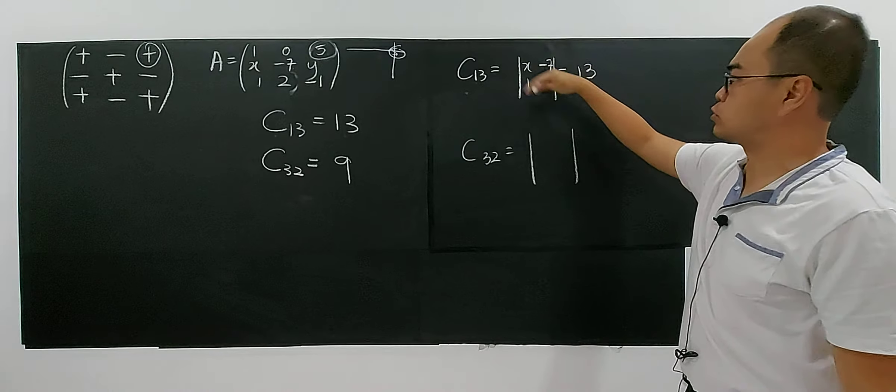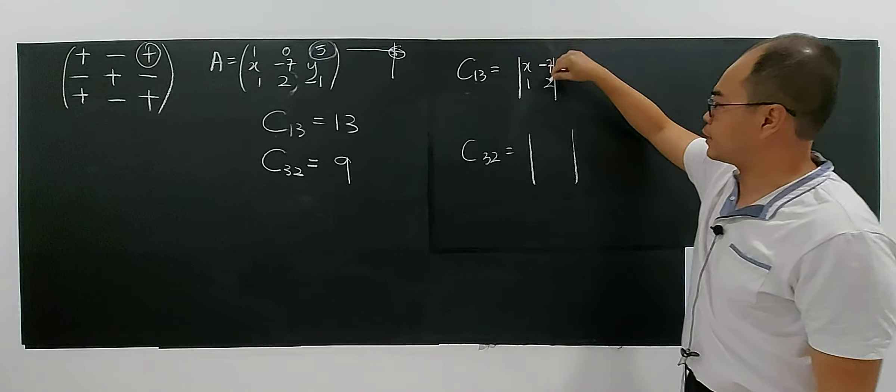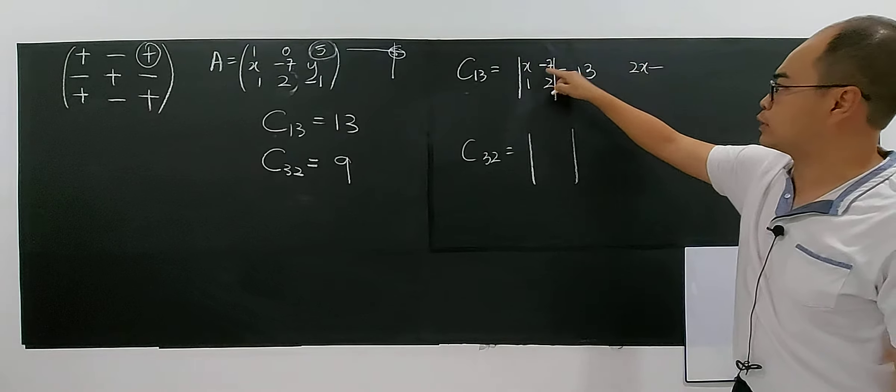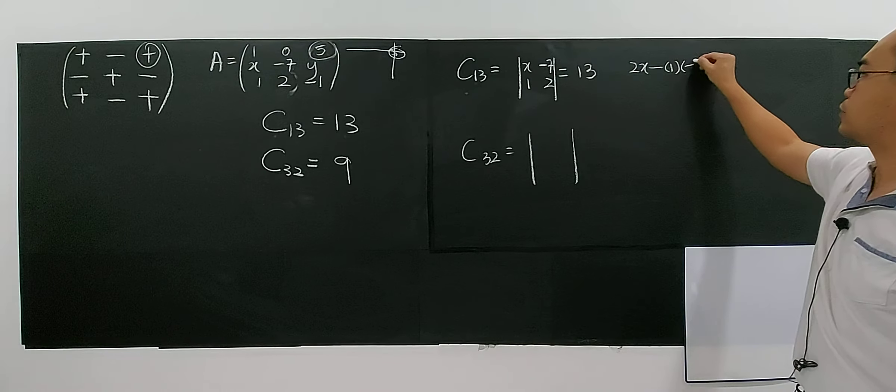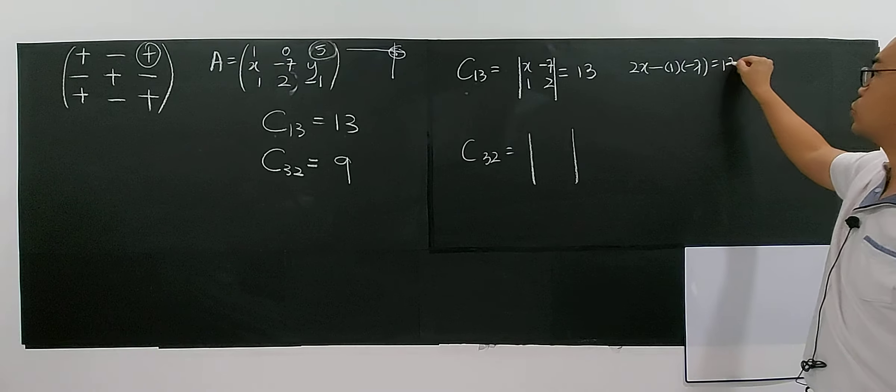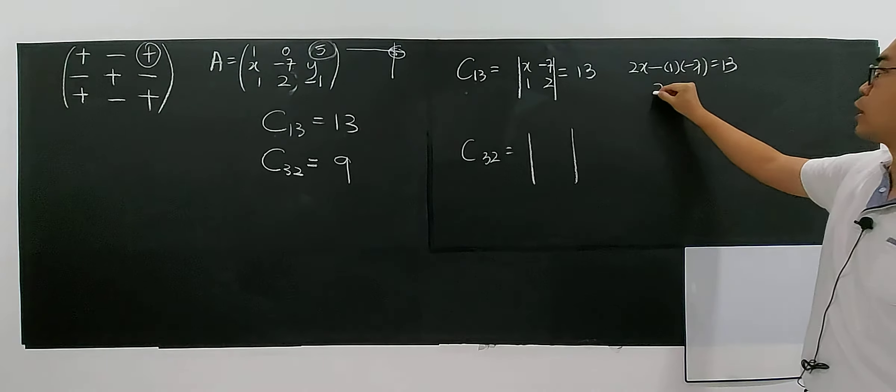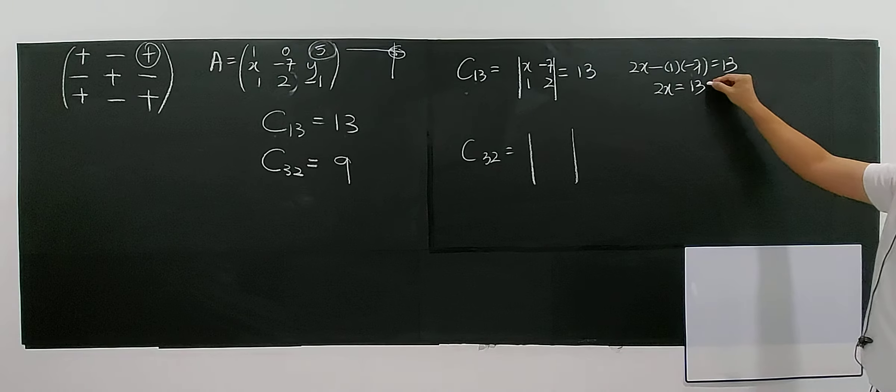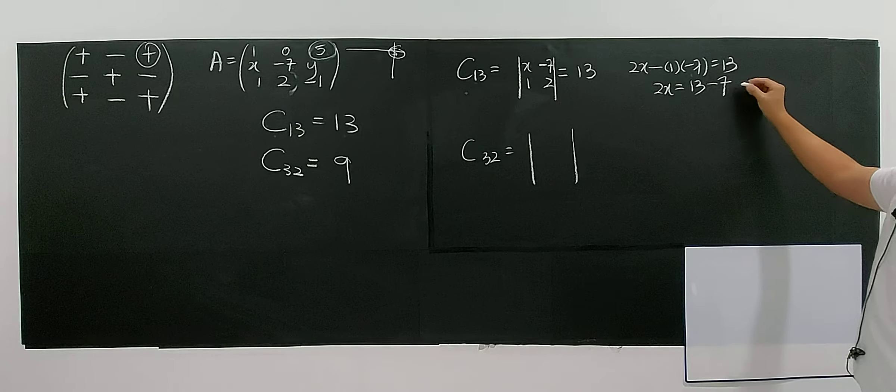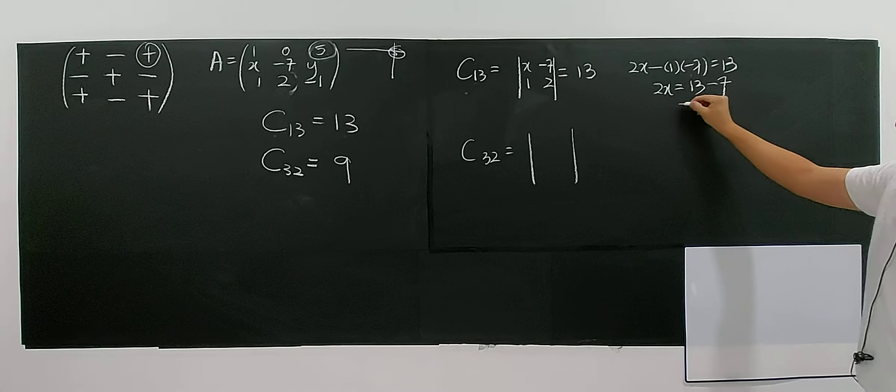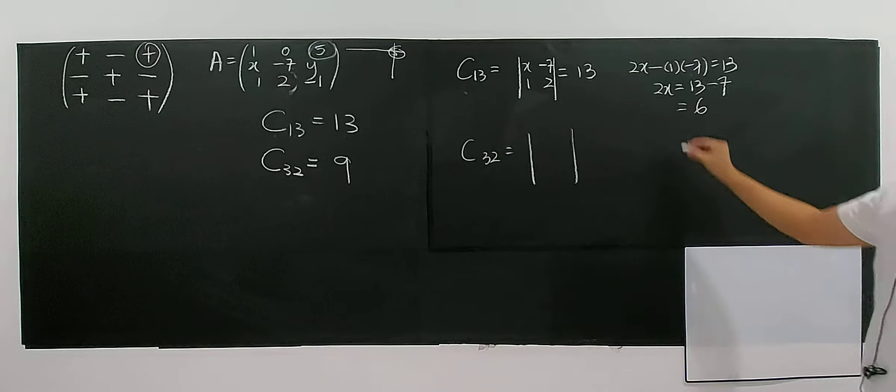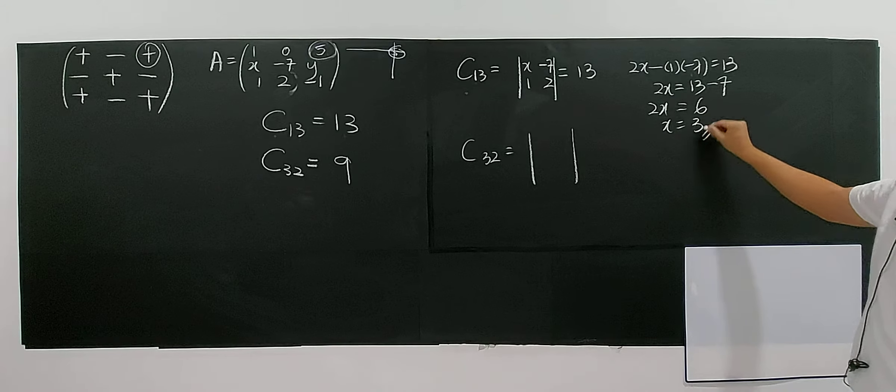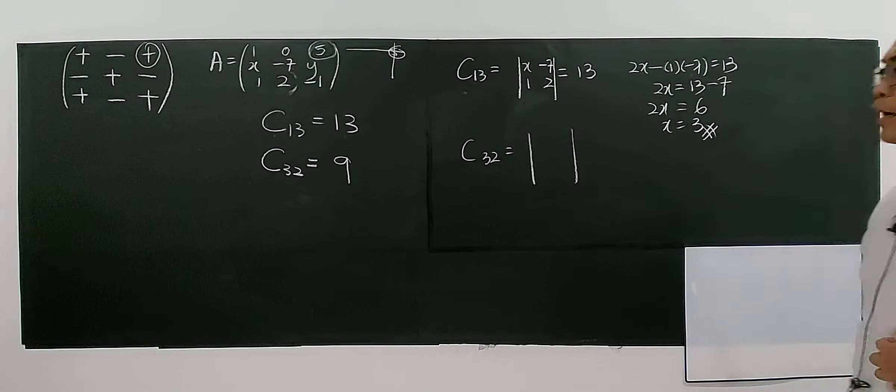So we can find the value of x first. 2x minus 7 equals 13. Positive 7, bring over, so you have 2x plus 7 equals 13. You have 6, right? So you have 2x equals 6. So your x will be 3. You have the value of x.